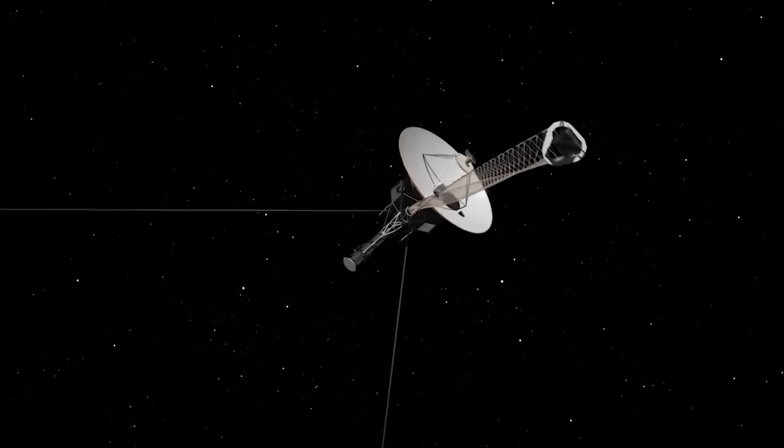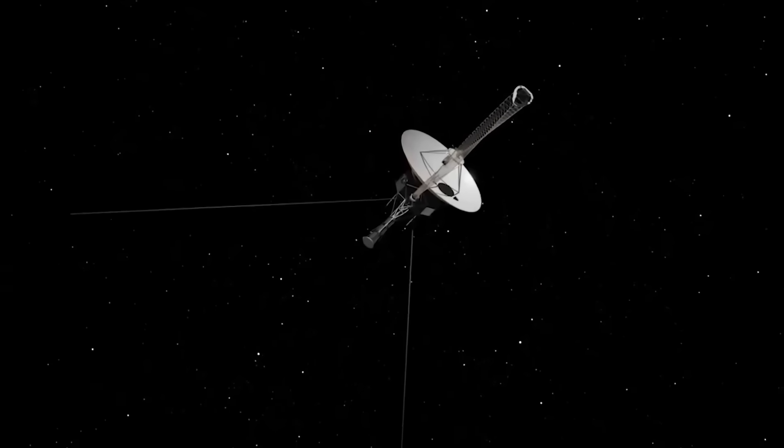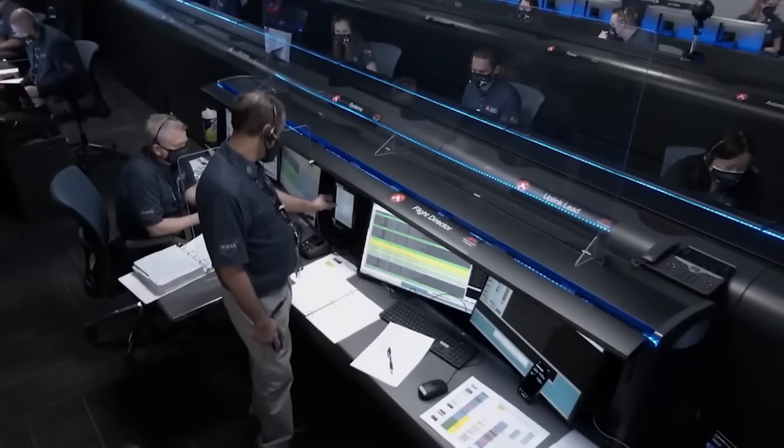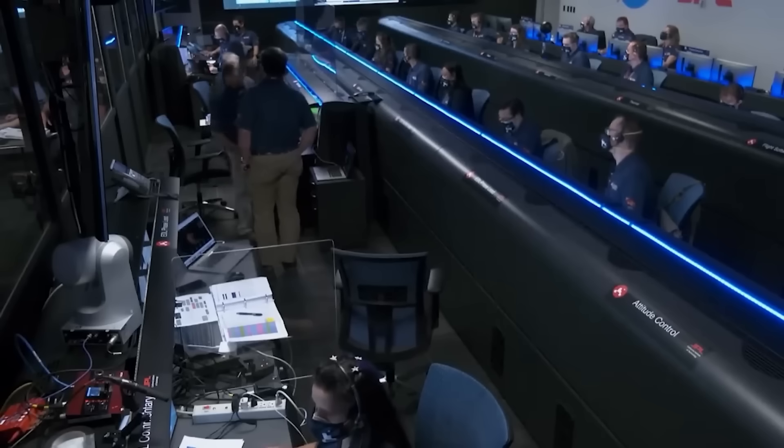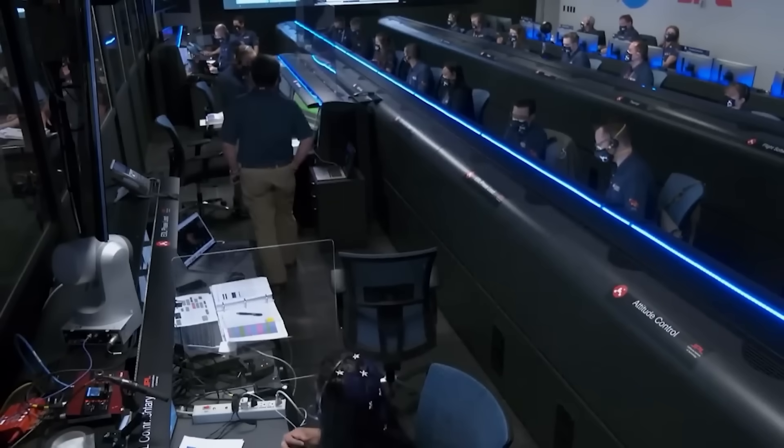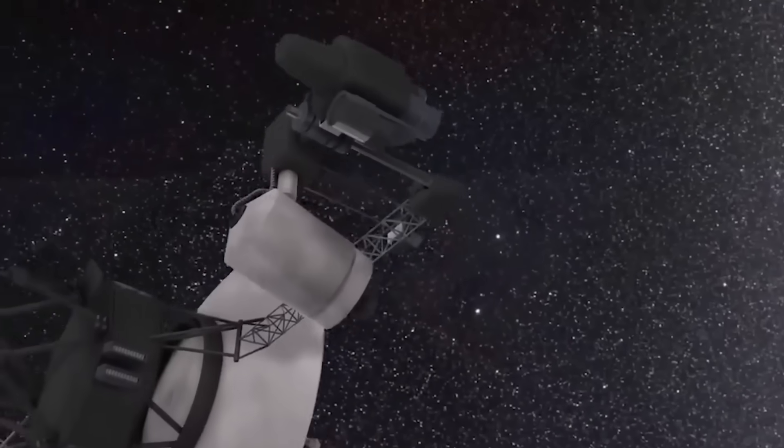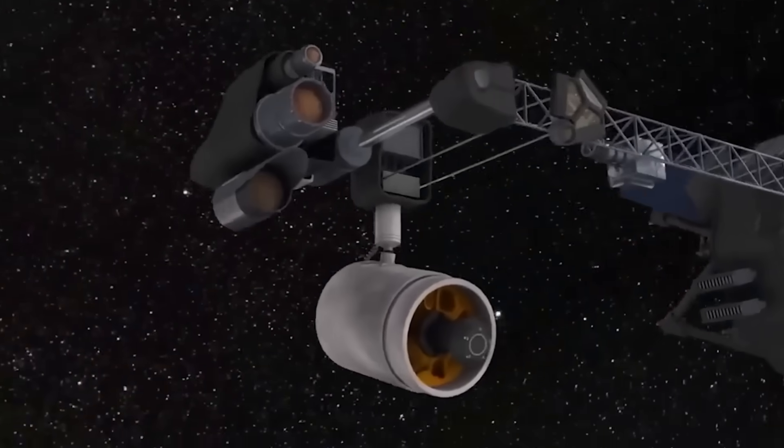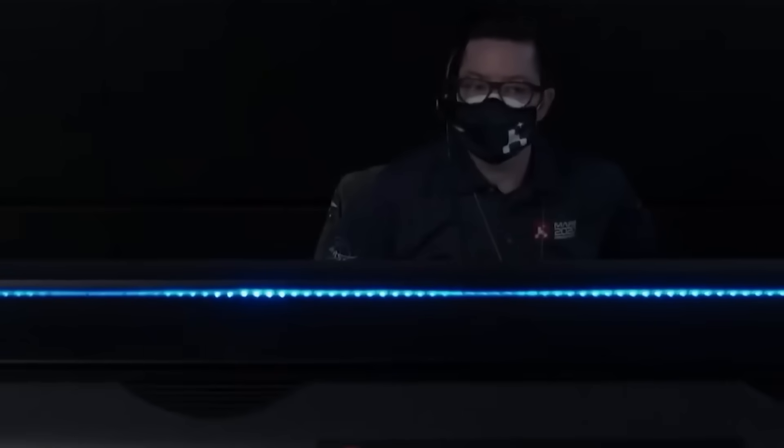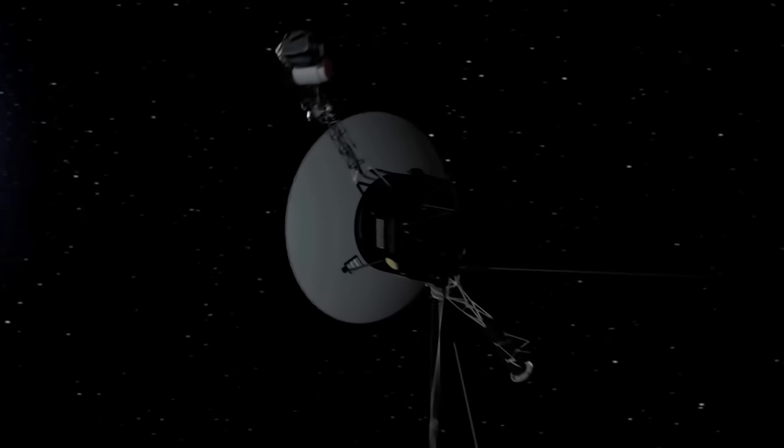For over four decades, Voyager 2 has been drifting quietly into the abyss, far beyond the reach of planets, past the cold edge of the solar system, into the great unknown. A ghost ship guided by Earth's last whisper in the 1970s.